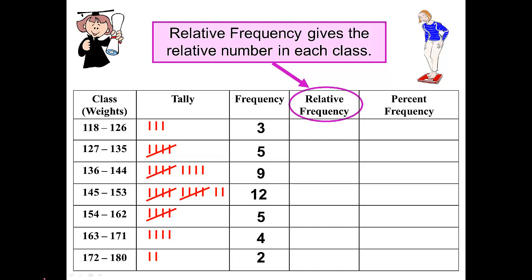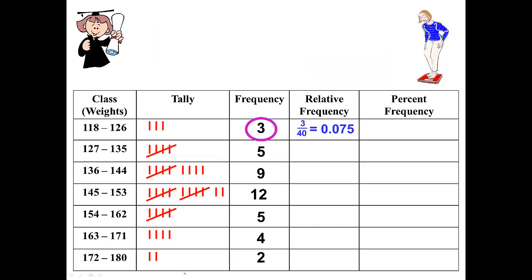The relative frequency of the first class is found by taking that frequency 3 and dividing it by 40, which gives us the decimal 0.075. You just simply take 3 divided by 40 in your calculator to do this. And the relative frequency is going to be 0.075.